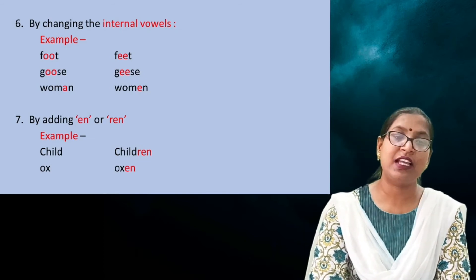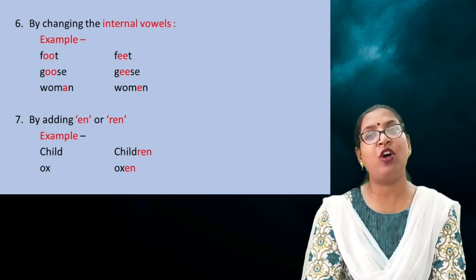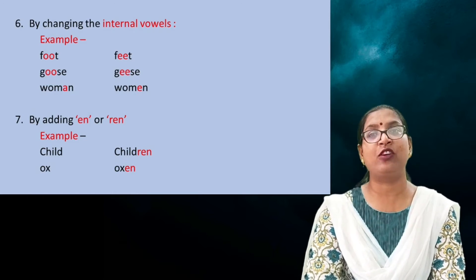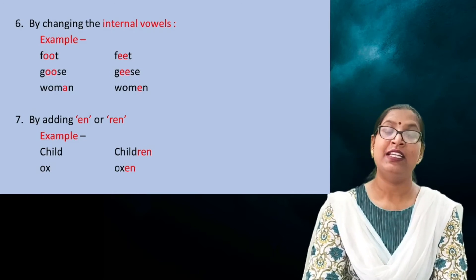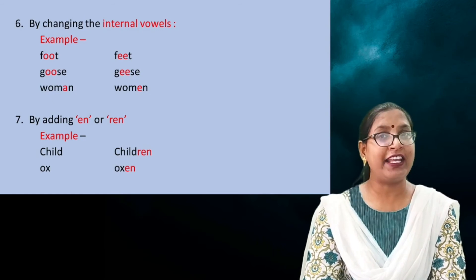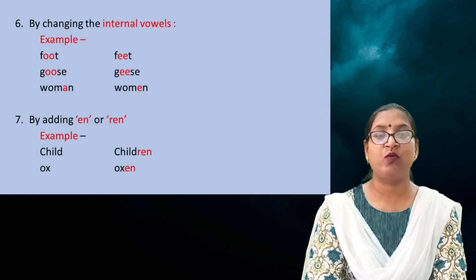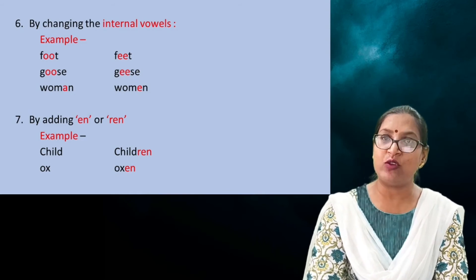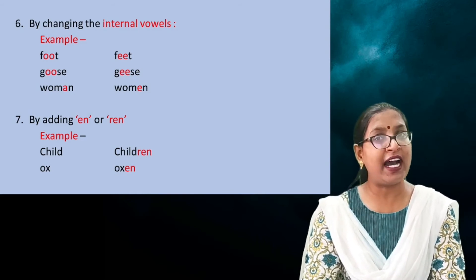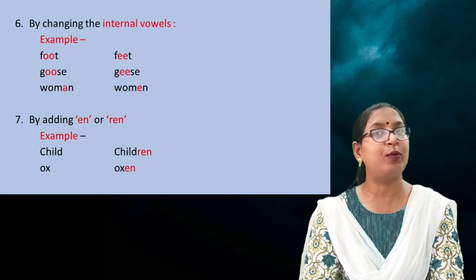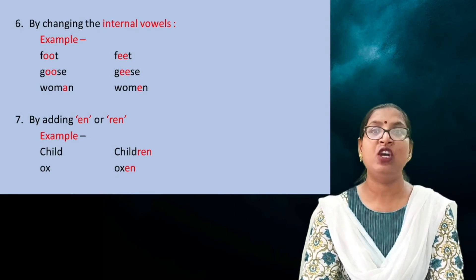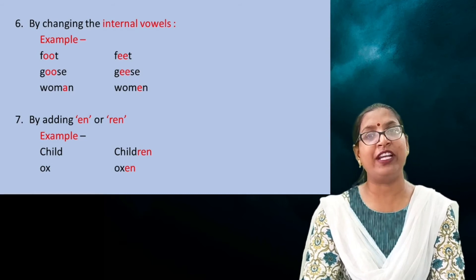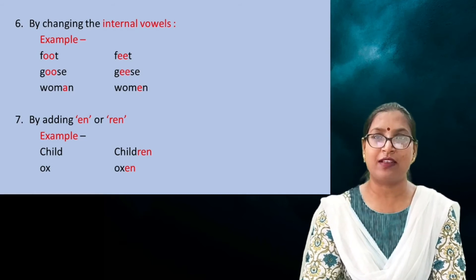The next rule: by adding EN or REN. For changing from singular to plural, we add EN or REN with some words. For example, 'child' — we add REN to make the plural form: 'children'. 'Ox' — we add EN to get the plural form: 'oxen'.